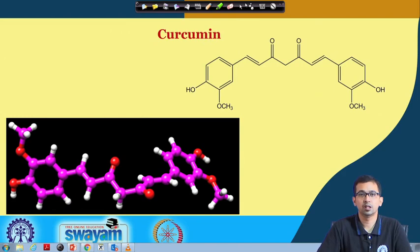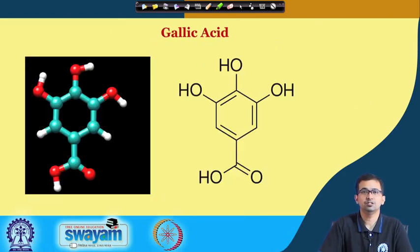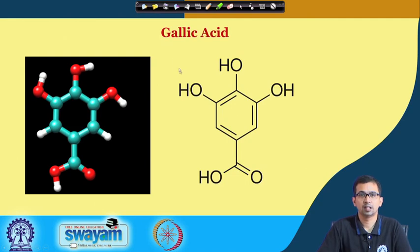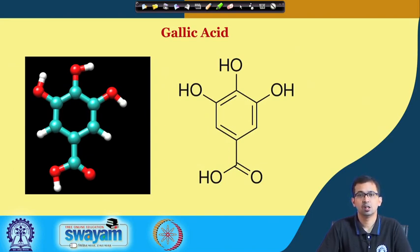The next molecule is gallic acid. Gallic acid has 3 OH groups and 1 COOH group. Generally, this type of molecule is known as a polyphenolic compound. So first we have seen the structure of curcumin, and next the structure of gallic acid.